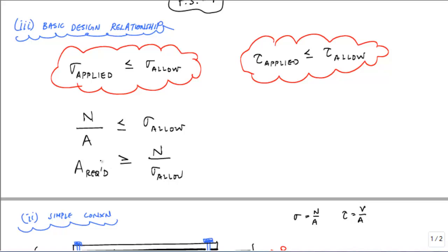When we design, we choose an area A_design that is greater than or equal to A_required. For example, if you require 0.48 inches squared, you'd choose something like half an inch squared — not exactly 0.48 — because you're selecting from standard shapes that manufacturers build for structural systems.